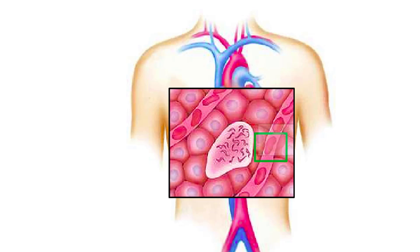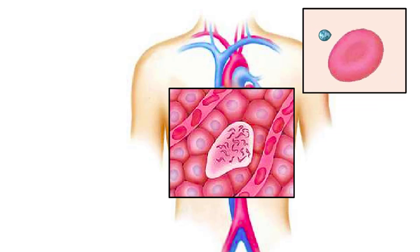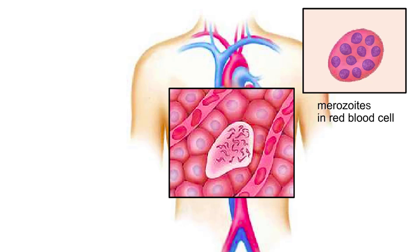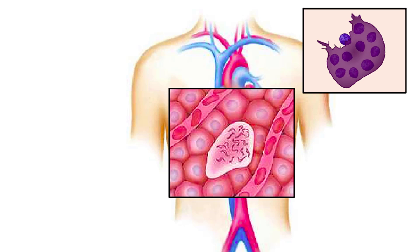Rupture of a liver cell releases the merozoites into the blood, and they enter red blood cells. Inside a blood cell, merozoites feed on hemoglobin and divide asexually. Eventually, the red blood cell ruptures, and merozoites and cell debris flow into the bloodstream.